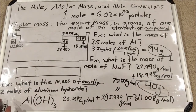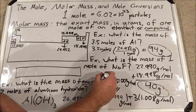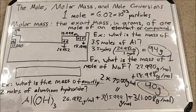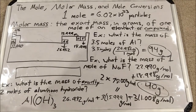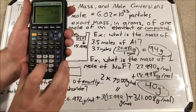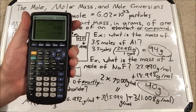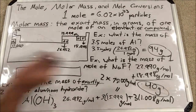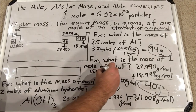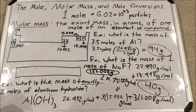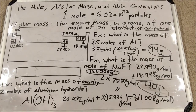Now I have two moles, so I multiply 78.003 by two. Since the problem says exactly two, that means two has an infinite number of significant digits. So when I multiply 78.003 times two, I can use all the digits in the result: 156.006 grams. This is how we go from a certain number of moles to a certain mass using molar mass.